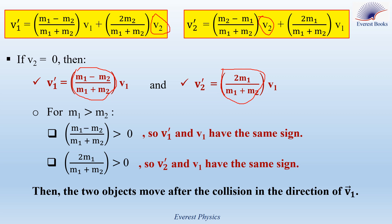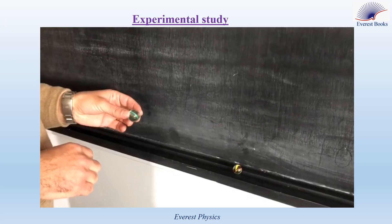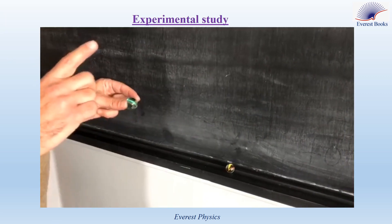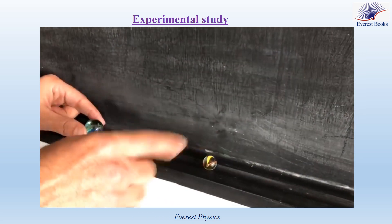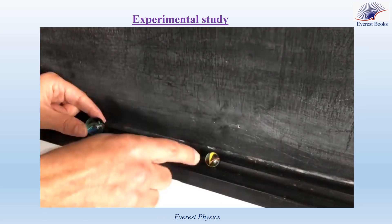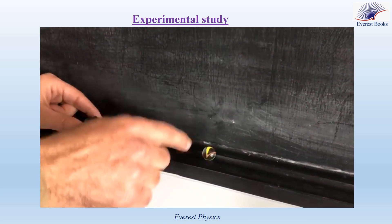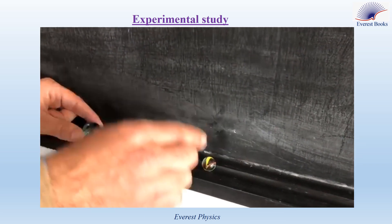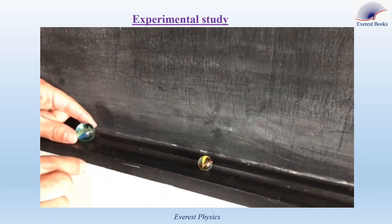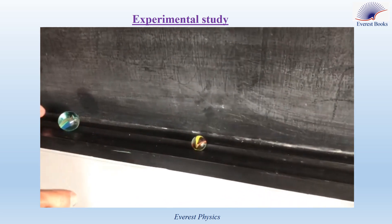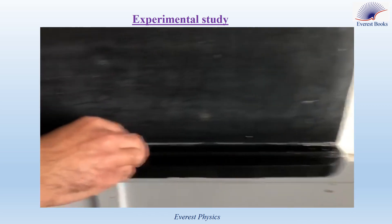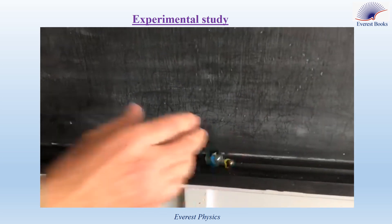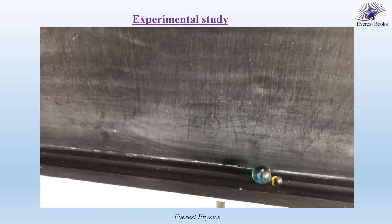Now Rabia will show you the experiment for this case. The first marble of mass M1 moves from left to right, while the second marble of mass M2 — where M2 < M1 — is initially at rest. As you see, after the collision both marbles move in the direction of V1.